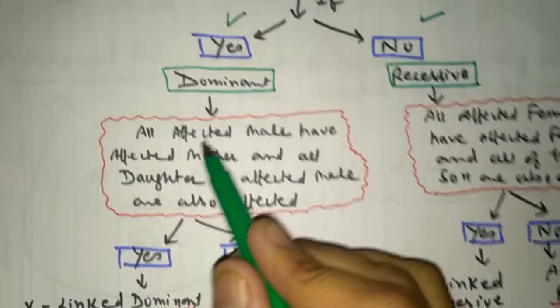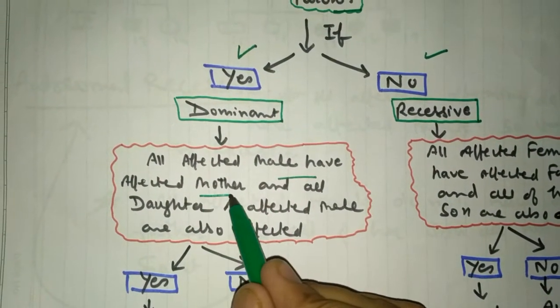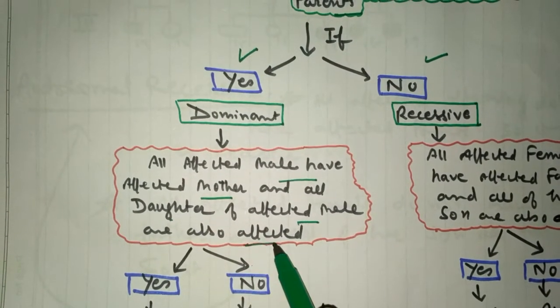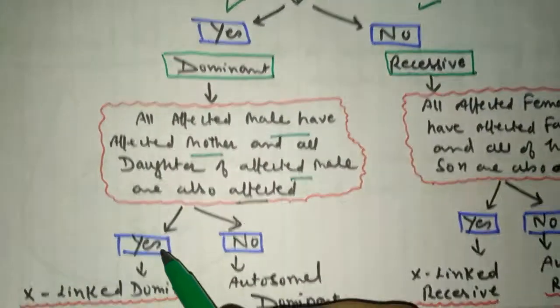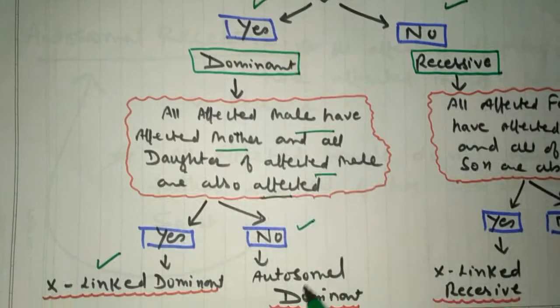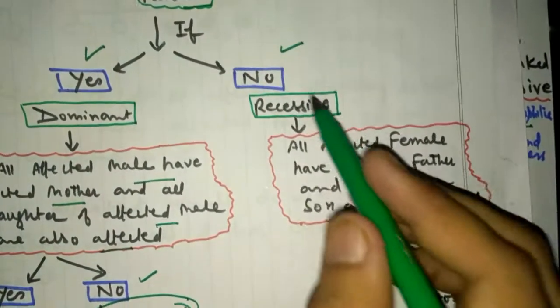In case of dominant, we will see: do all affected males have an affected mother and are all daughters of affected males also affected? If it is yes, it is X-linked dominant. If no, it is autosomal dominant.